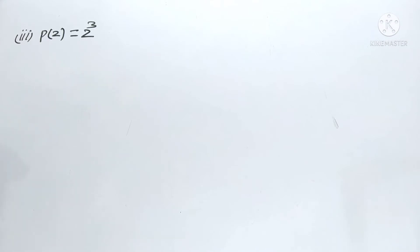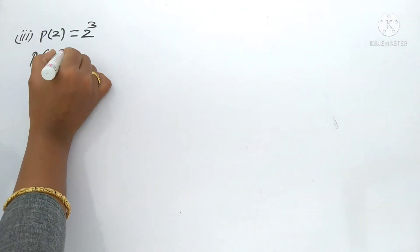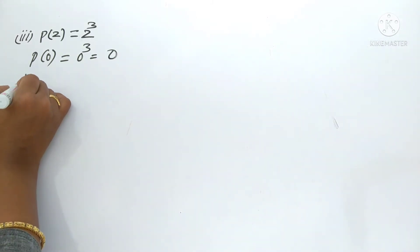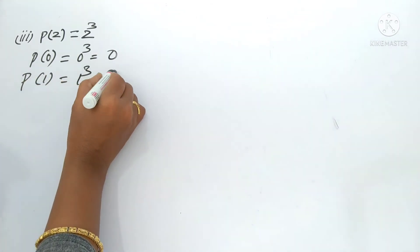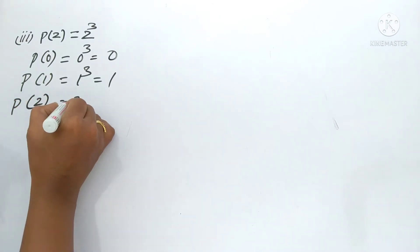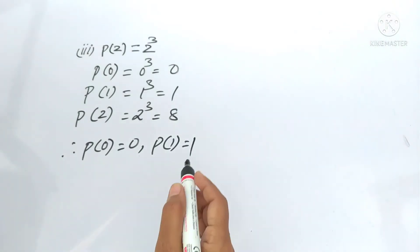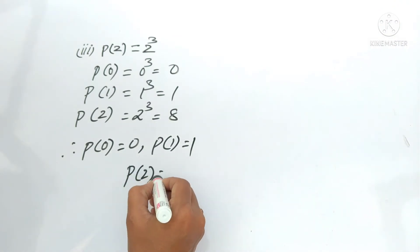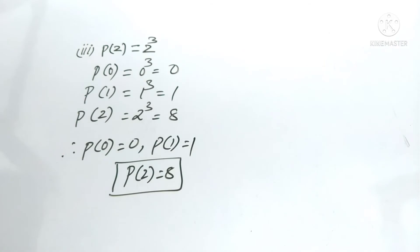Third problem: p of z equals z cube. So p of 0 equals 0 cube, that is 0. p of 1 equals 1 cube, that is 1. And p of 2 equals 2 cube, that is 8.